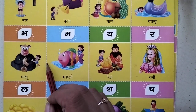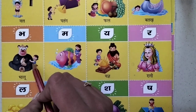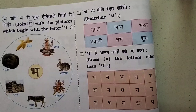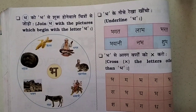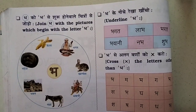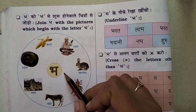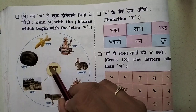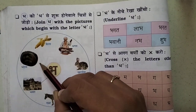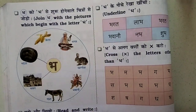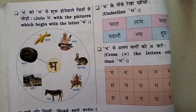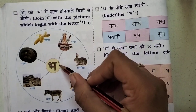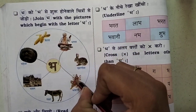आज हम जो learn करने वाले हैं, वो है भ — भ से भालू। Okay, let's start kids। भ को भ से शुरू होने वाले चित्रों से जोड़ो — join भ with the pictures which begin with letter भ। चलो, भ को उसके picture के साथ join करते हैं — भ से भवन यानि कि महल, भ से भट्टा — जो हम अभी fire करते हैं, winter चल रहा है तो उसको भट्टा बोलते हैं — उसके बाद भगर, भवानी।